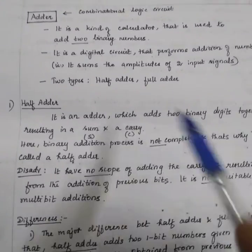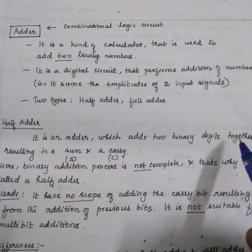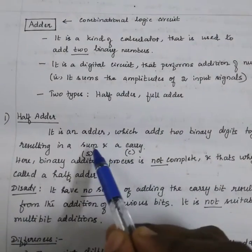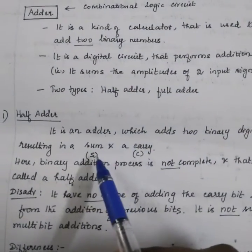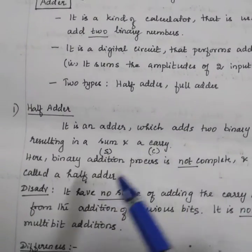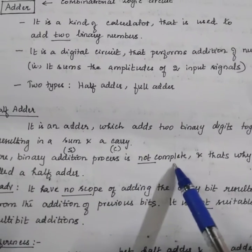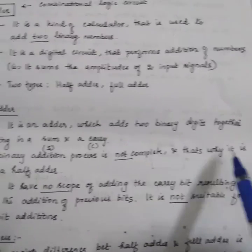First, half adder. It is an adder which adds two binary digits together resulting in a sum and carry. Sum is indicated with S and carry with C. Here binary addition process is not complete and that's why it is called half adder.